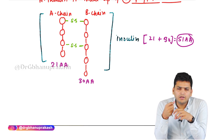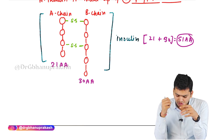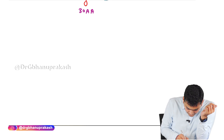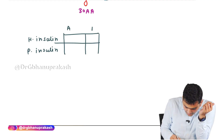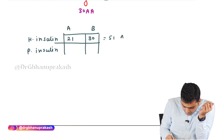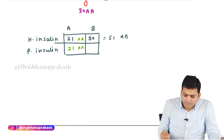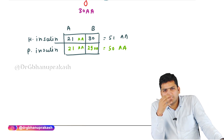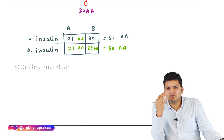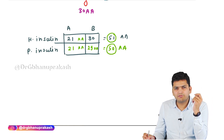Earlier we were using porcine insulin, which was leading to anaphylaxis. Comparing human and porcine insulin: human insulin has A chain with 21 amino acids and B chain with 30, totaling 51. Porcine insulin has the same A chain with 21, but the B chain has only 29 amino acids, totaling 50. The terminal amino acid of the B chain present in human insulin is missing in porcine insulin, which is why it caused anaphylaxis.